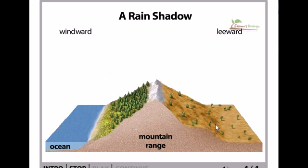So this area becomes dry and occupies what is known as the rain shadow. This region is called the rain shadow because it lacks the rainfall that the windward side tends to receive — it is the rain shadow of the mountain.